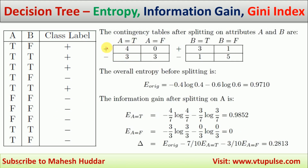Rows contain the class labels and the columns contain the possible values for that particular attribute. In this case, there are two class labels: one is positive and one is negative. The possible values for A are true and false. First we need to know how many positive examples are there where A is equivalent to true.